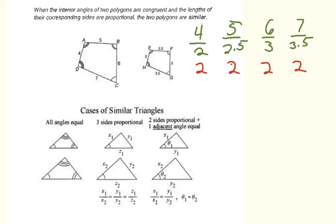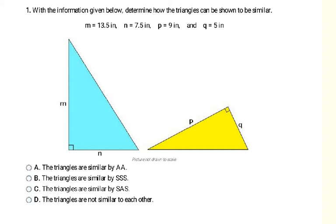There are three ways to prove triangles or shapes are similar: AA (all corresponding angles are congruent), SSS (all three sides are proportional), or SAS (two sides are proportional and the included angle between them is equal).